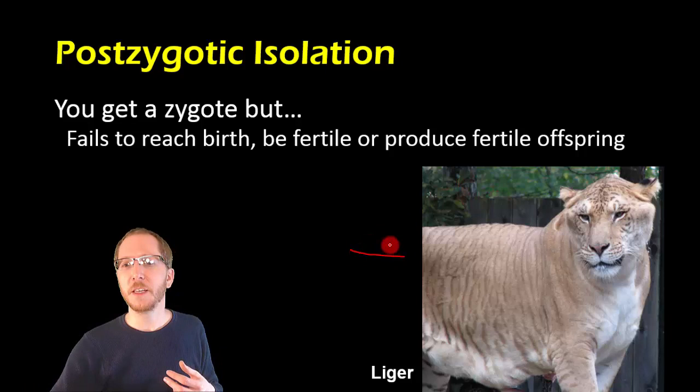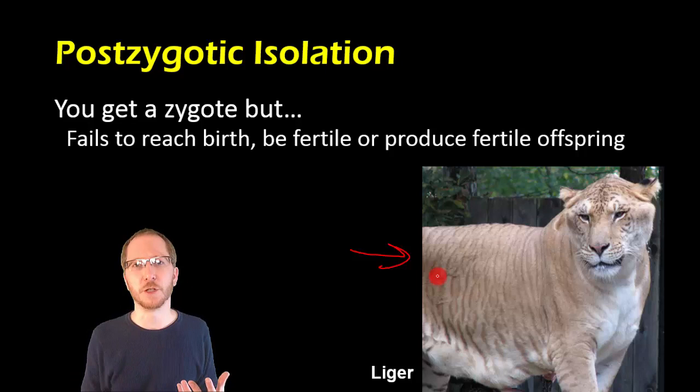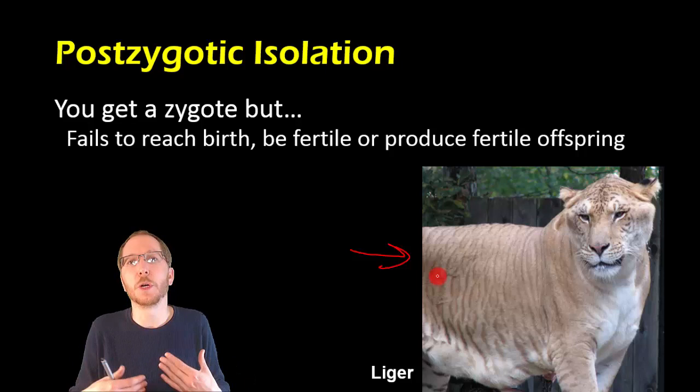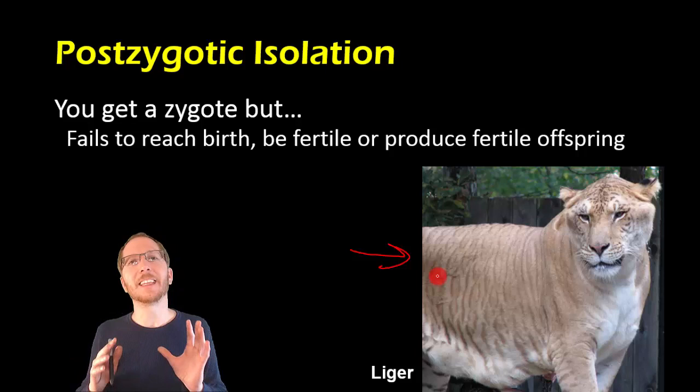Ligers ultimately tend to have some health issues and they tend to have fertility issues. And so if you're born but you can't reproduce either with other ligers or lions or tigers or anything, you are now completely isolated and you're going to disappear.